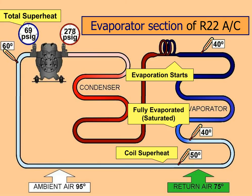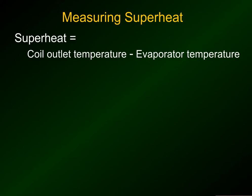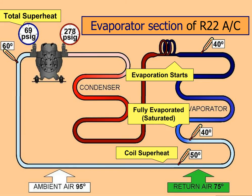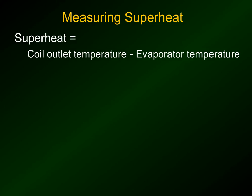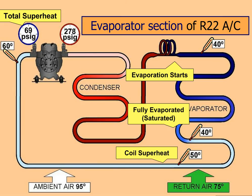Superheat is the coil outlet temperature — fully evaporated — minus the evaporator temperature. That evaporator temperature is what we get by measuring the pressure and converting it to temperature, like we did for the TD. So at 69 PSIG the evaporator temperature is 40 degrees, and as it leaves the evaporator the refrigerant is at 50 degrees, giving us 10 degrees of superheat.